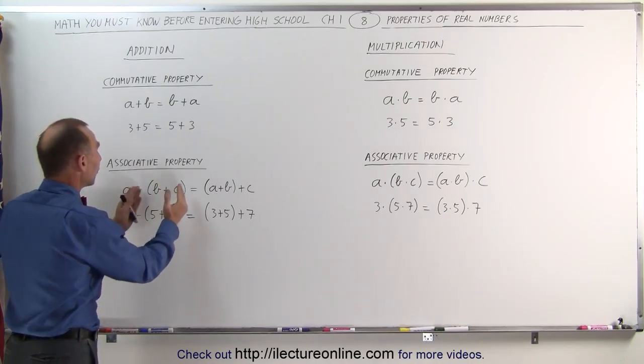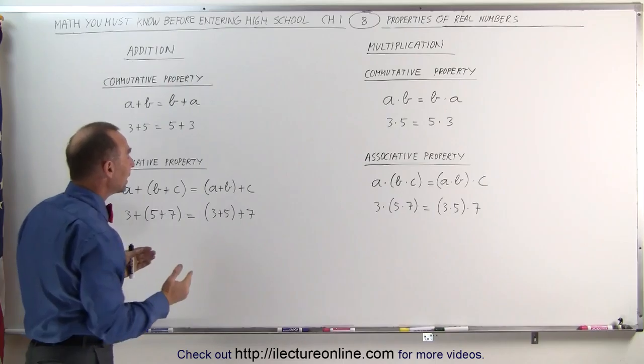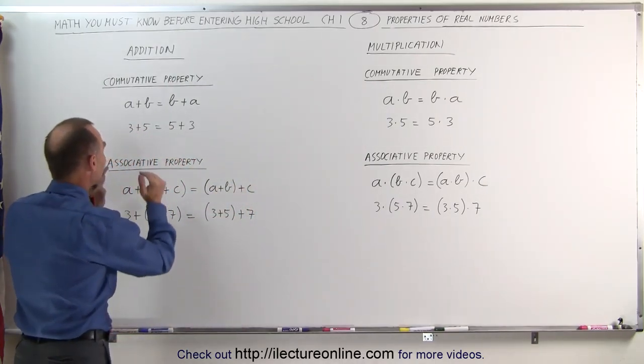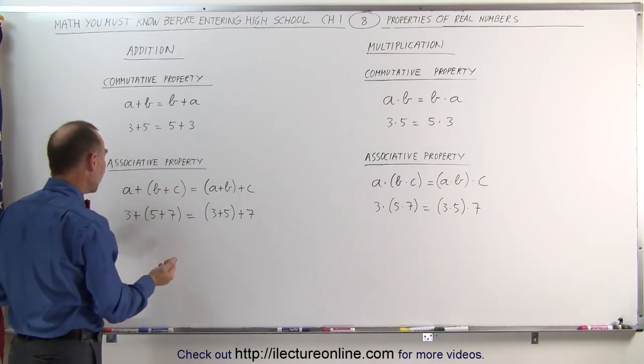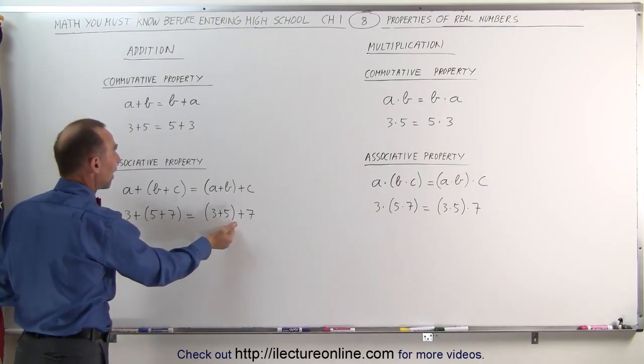The associative property means that we can group things together. We can associate or group things together in different ways, and it should not make any difference. When we add numbers together, A plus B plus C, we can first do B plus C before we add A to it, or we can add A plus B before we add C to it.